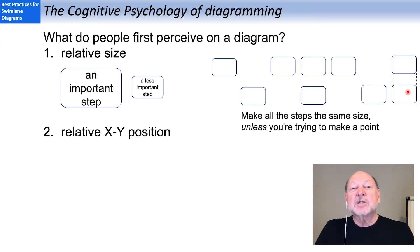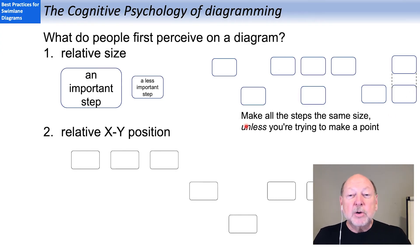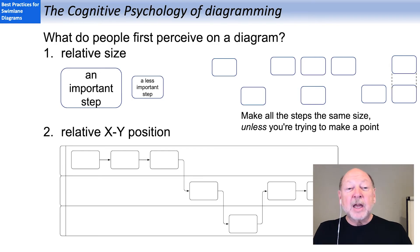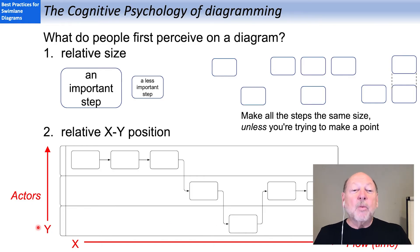Second, we notice the relative XY position. So we are going to infer some meaning from how these steps are spread out left to right on the X-axis and up and down on the Y-axis. And if I express those in swim lane format, we can see that a swim lane diagram drawn properly is ideally suited for rapid uptake by people because the X-axis shows us the flow, time sequence dependency, and the Y-axis organizes it by the various actors. So let's keep that in mind.